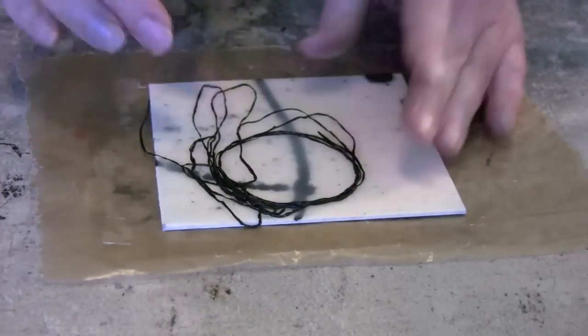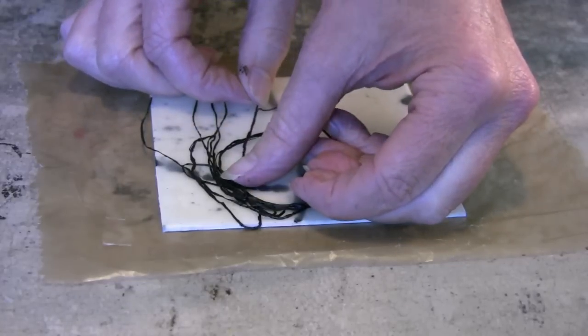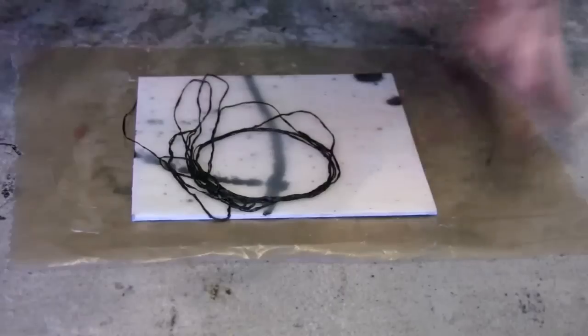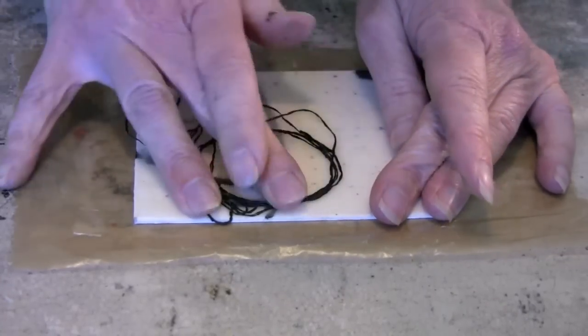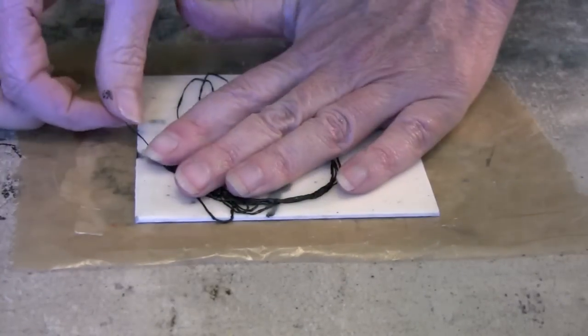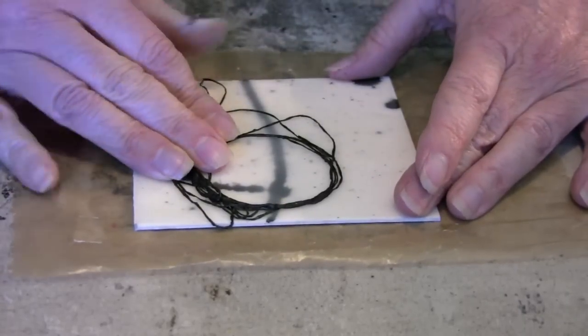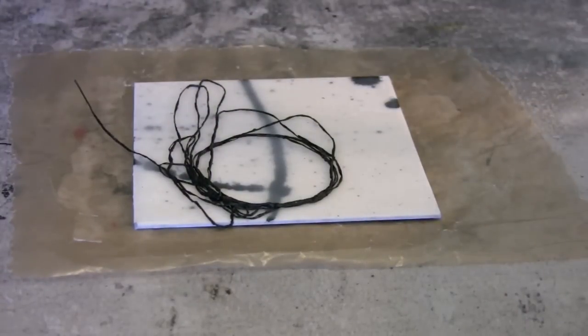Now before you get all grossed out, it's actually fresh, clean, pre-used dental floss. And you can see what I've done is I'm now embedding this dental floss into the surface of a pre-waxed encaustic surface, and you'll see that I'm about to cover it with some wax paper.